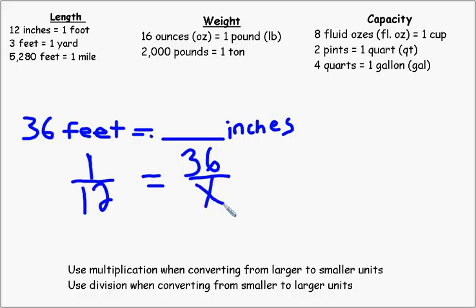How many inches would that be? So 1 to 12 equals 36 to what? We could use cross multiplication, cross products: 1x equals 12 times 36. And we should get 432.